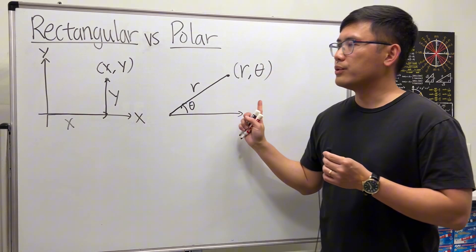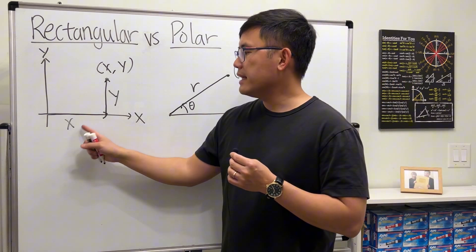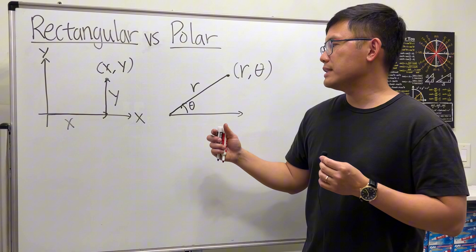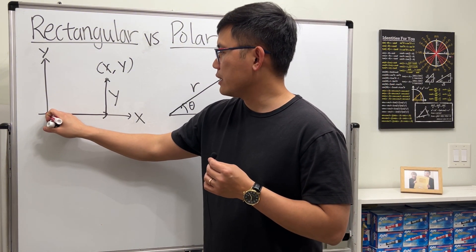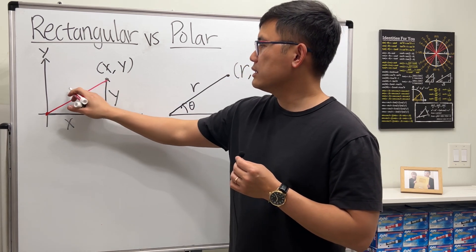Let's see how we can go from rectangular to polar. Suppose we have x and y given. How can we squeeze out the r and theta? First, let's just go ahead and connect from the origin to this point.